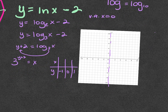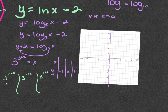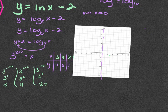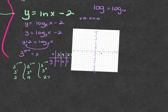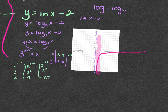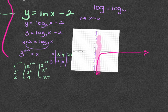Now I plug in y values: 3 to the negative one plus two, 3 to the zero plus two, and 3 to the first plus two. Three to the first is three plus two is five; three squared is nine plus two is eleven; three cubed is twenty-seven plus two is twenty-nine — but I'll approximate. So points are roughly (one-third, negative one), (nine, zero), and (twenty-seven, one). We know the curve comes close to the vertical asymptote without touching it.